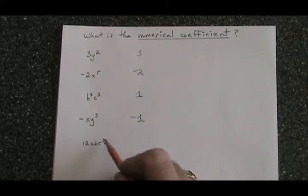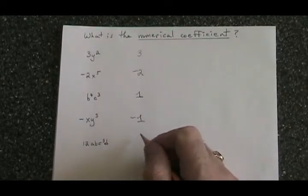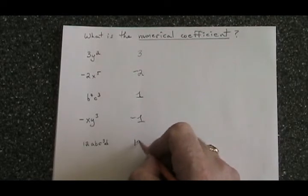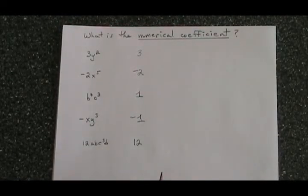Even in a very big term like this, all we need to do is look at the number at the beginning, and we can see that the numerical coefficient of this term is 12. That's how you identify the numerical coefficient of a monomial.